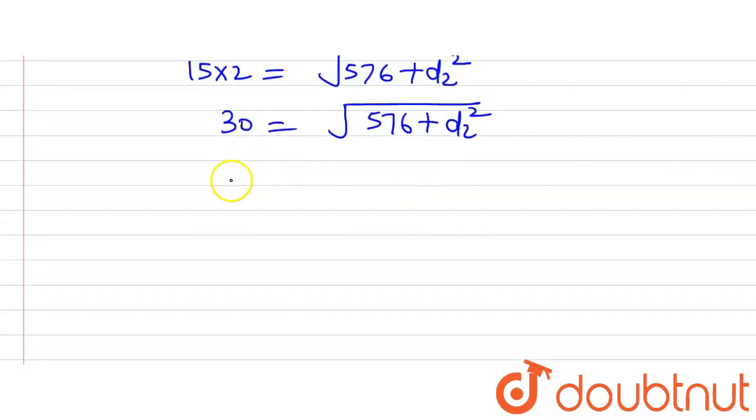Now squaring both sides. So taking the square of both sides we will have 30 raised to the power 2 on the left hand side and this square root will get cancelled out when we take the square of the terms on the right hand side of the equation. So we will be left with 576 plus D2 squared.